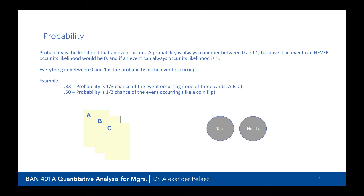Probability is the likelihood that an event occurs. It is always a number between zero and one: if an event can never occur, its likelihood is zero, and if an event always occurs, its likelihood is one. Everything in between zero and one is the probability of the event occurring and is therefore a measure of the uncertainty of that event.